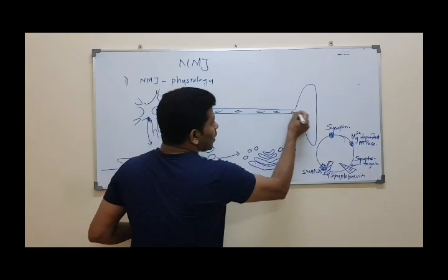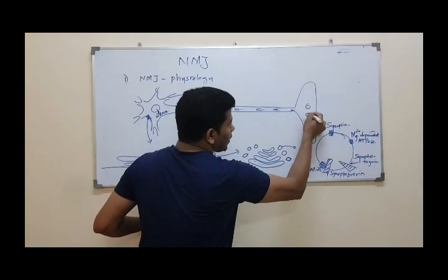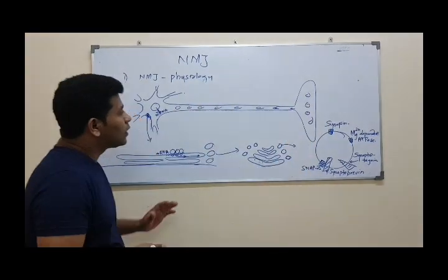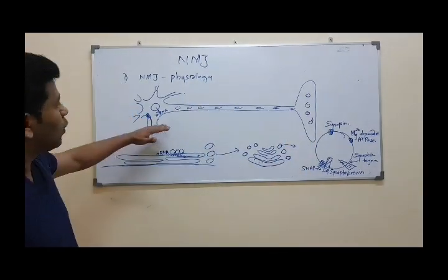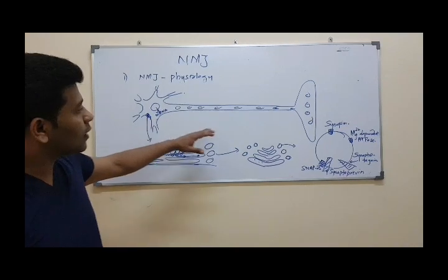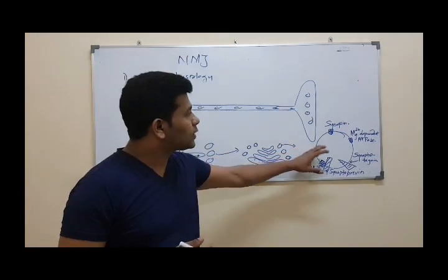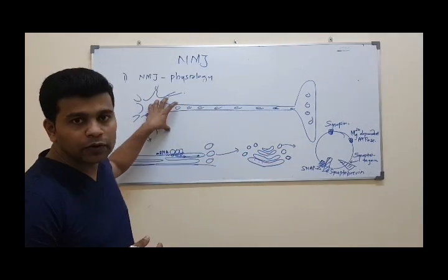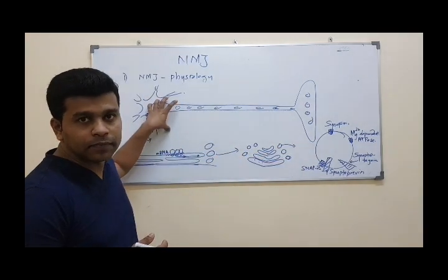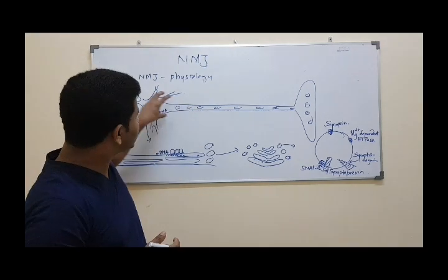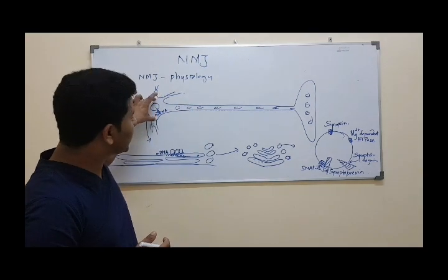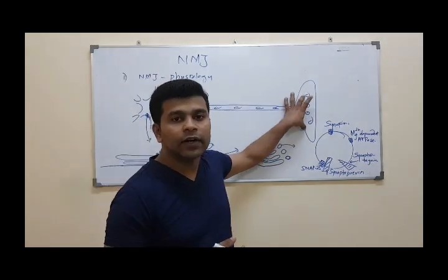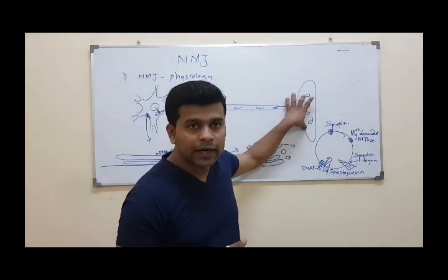This is the nerve terminal. The cell body manufactures the vesicles. When we release the vesicles, we release them at the nerve terminal.